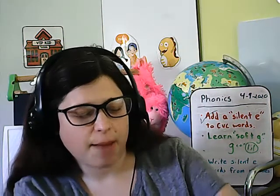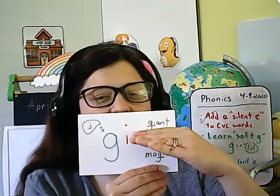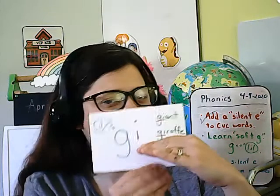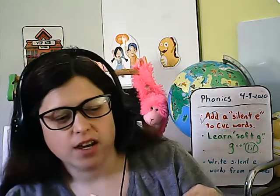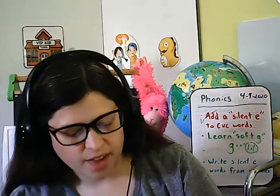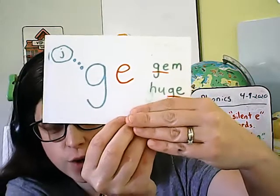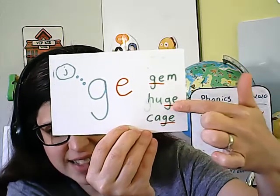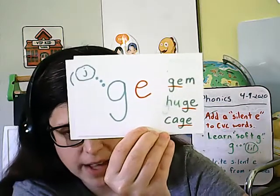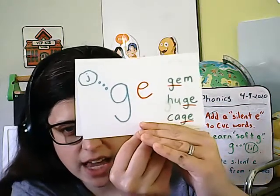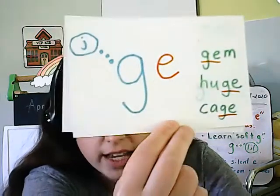Now let's look at some examples of words that have soft G in them. The G-I words are: giant, giraffe, and magic — it has the J sound in the middle. G-E words: gem, like a gemstone; huge; and cage. Huge also has a silent E that makes you say its name, as well as making the G say J. Both huge and cage are examples of silent E words.